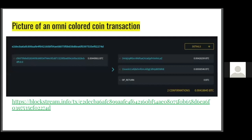Here is a picture of a colored coin transaction from Blockstream.info, using the Omni protocol. It looks like a normal Bitcoin transaction — there's a previous transaction input, recipient addresses, and a change address returning 0.004 BTC to the sender. One recipient is getting 546 satoshis, and that address is also the recipient of the colored coins.